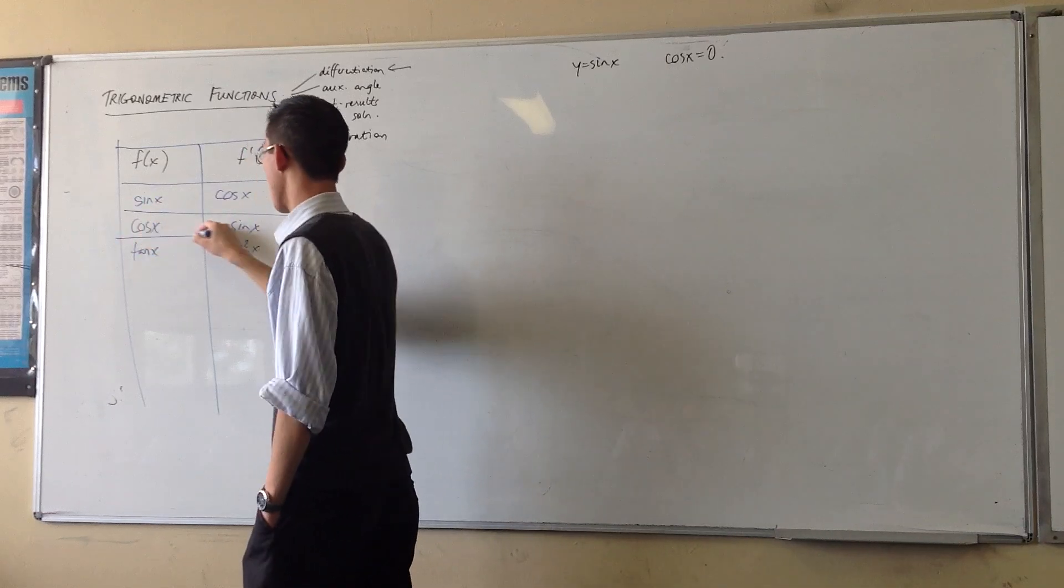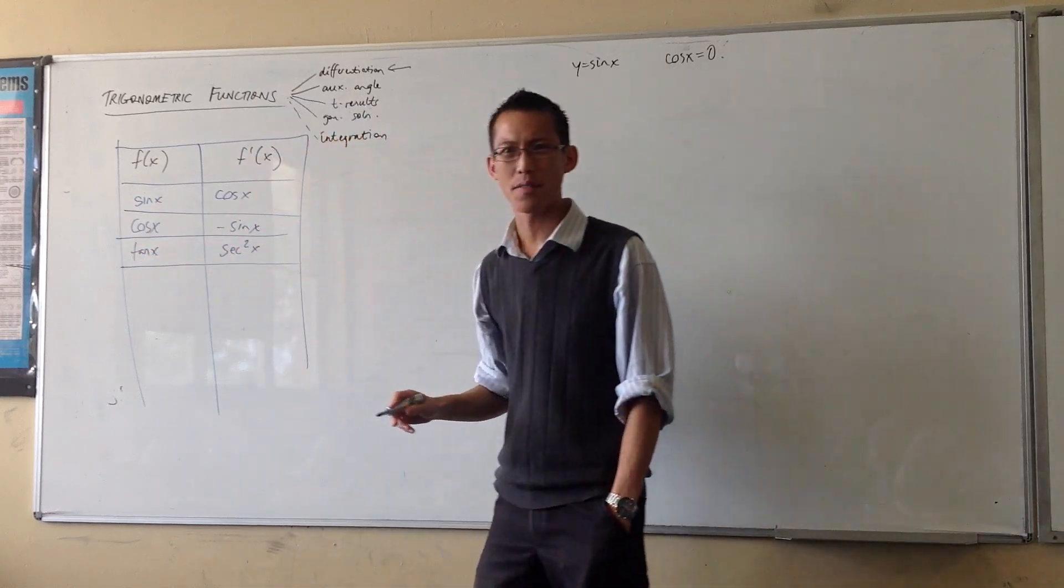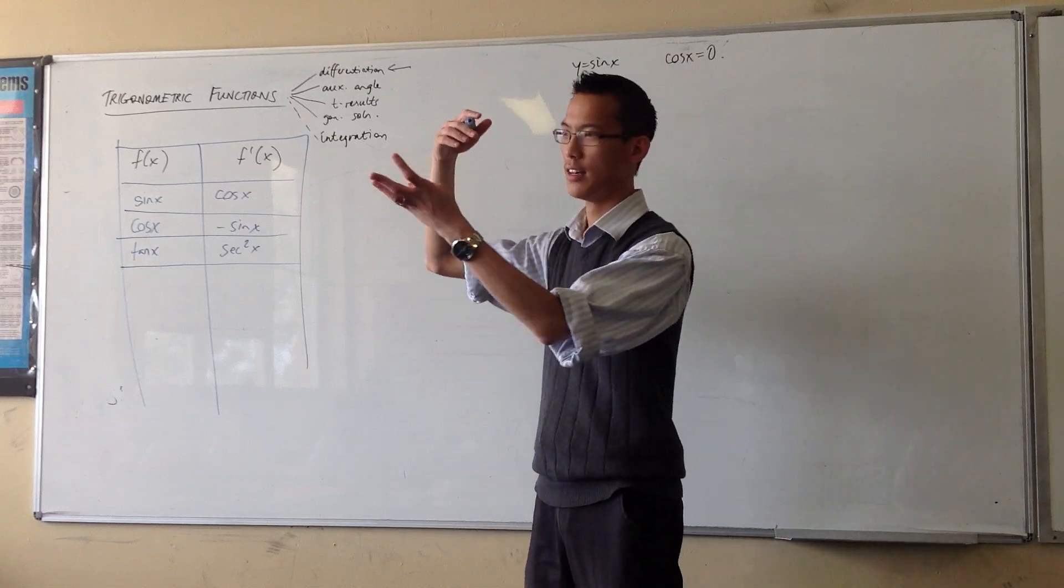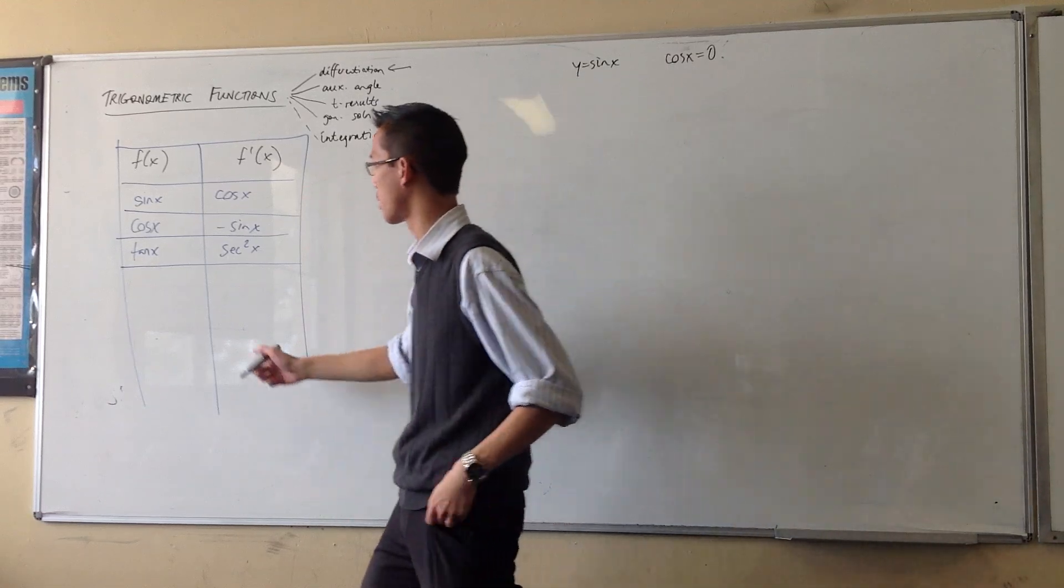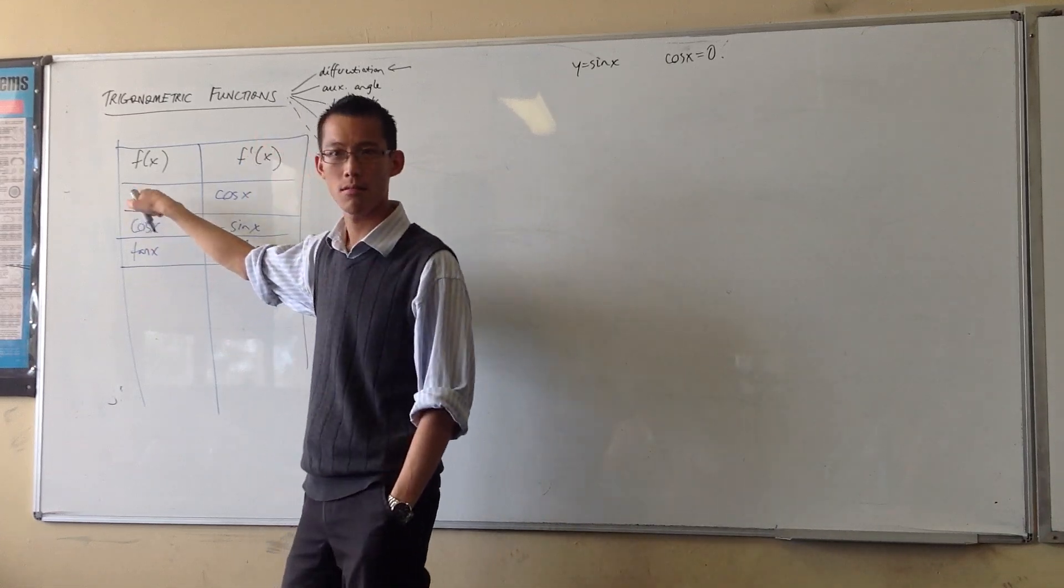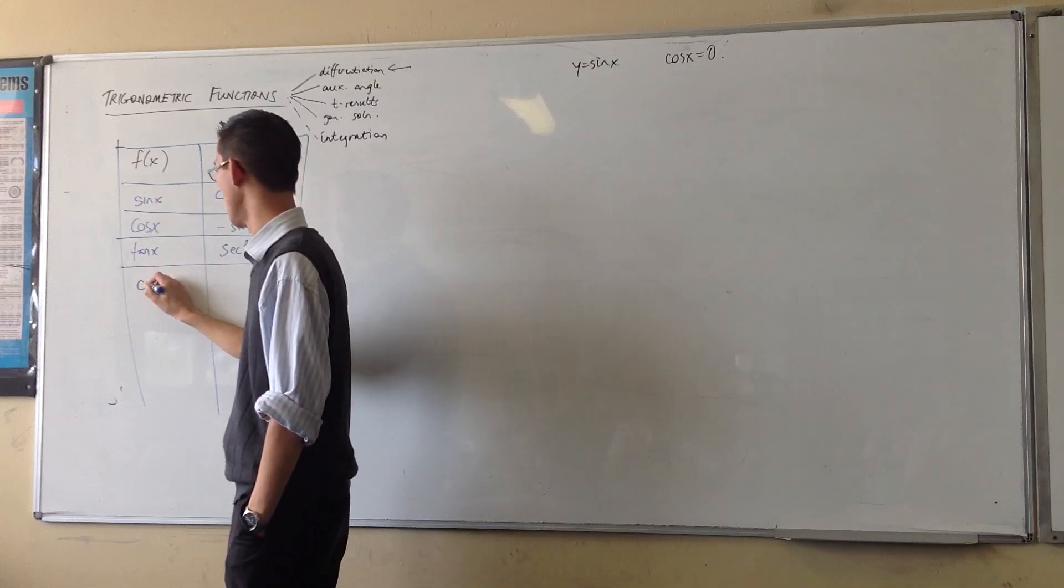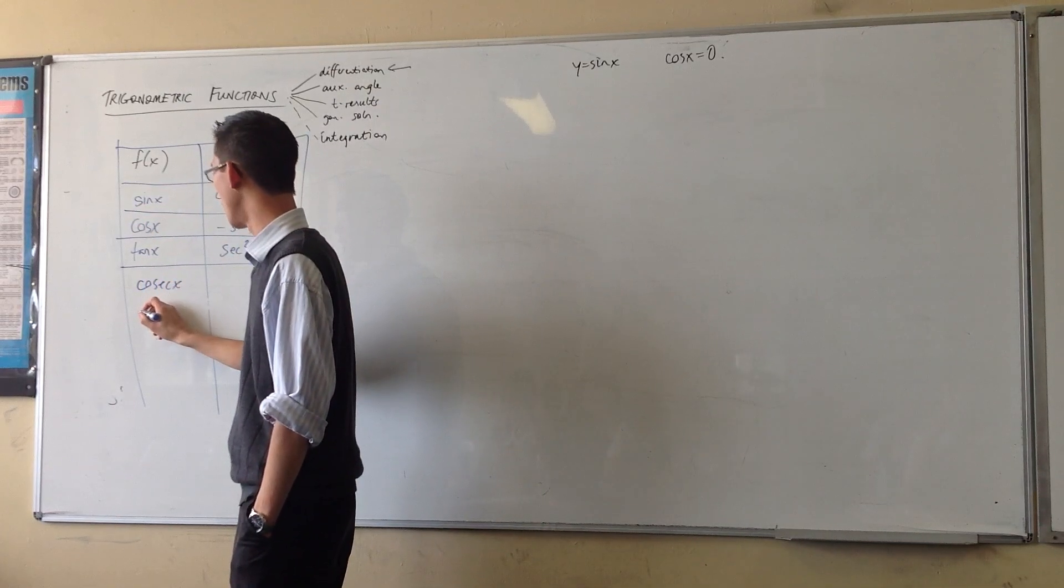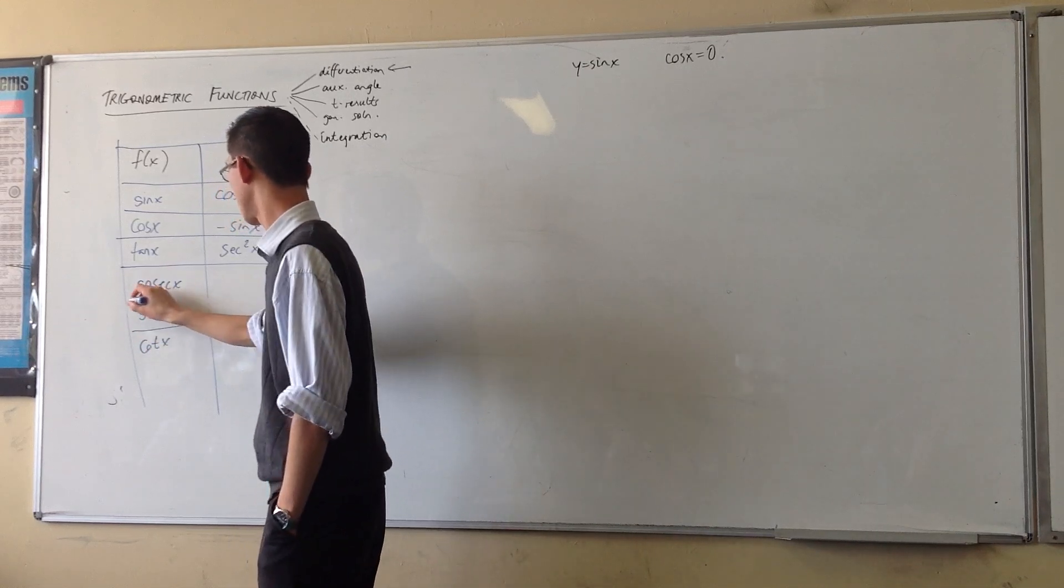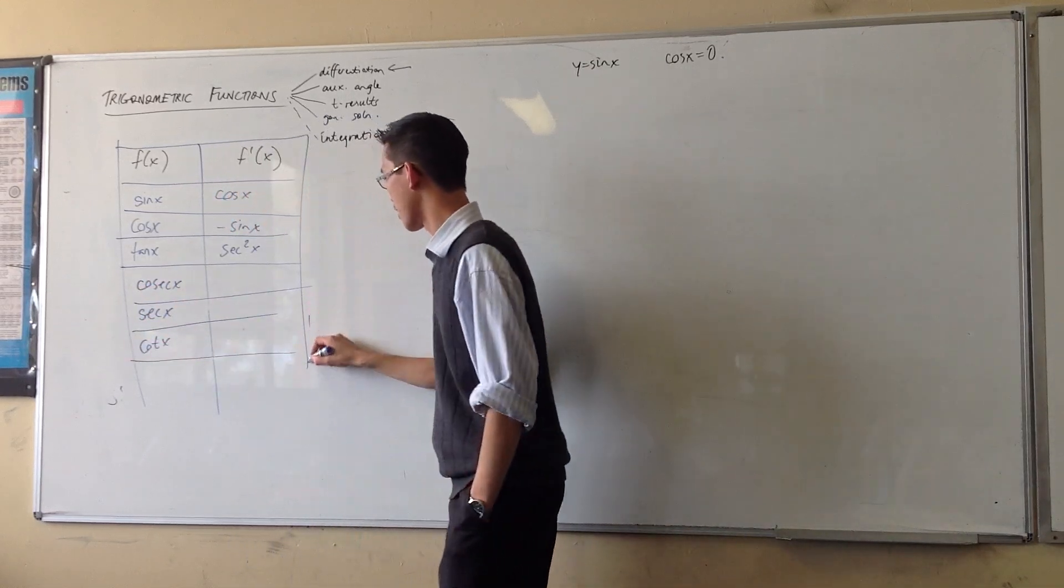But then when you get to the reciprocals, I know they come up less often, but they come up often enough that it's worth actually remembering rather than going back to chain rule or quotient rule, that kind of thing. So, sine cos tan, in order, their reciprocals are, you look at the third letter for each reciprocal function. So, cosec, sec, and cot.